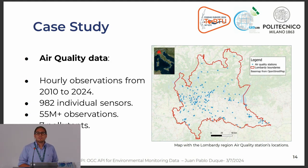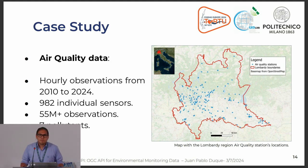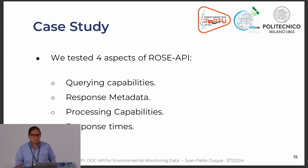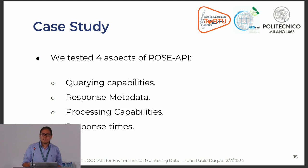This map shows how spread the sensors are. We have more than 55 observation types and seven pollutants, and we wanted to test how our implementation handled big data volumes. We tested four aspects of our implementation against the API that ARPA provides. We have strong results for querying, response metadata, and processing capabilities, which is something ARPA does not have. However, response times are not very good at the moment, so there is a lot of room for improvement. For querying capabilities, we provide spatial queries directly on the observations, which is something ARPA does not provide.